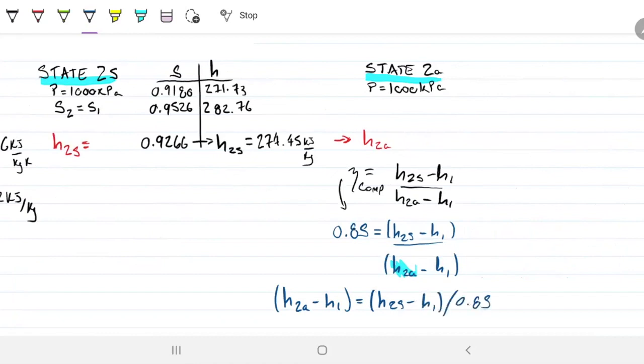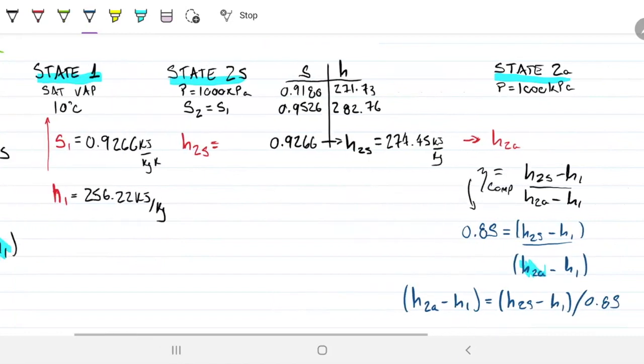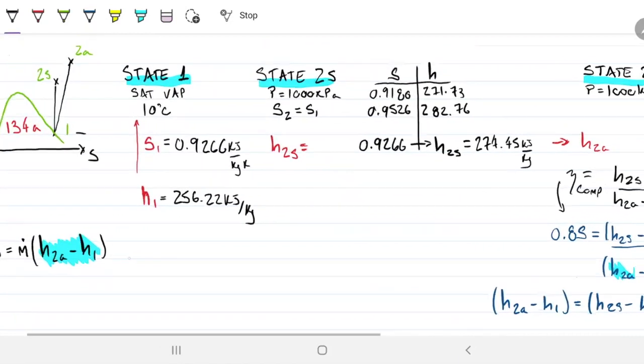And you could simply go, h2A minus h1 equals h2S minus h1 divided by 0.85. So I can save myself a couple of steps. So I can just plug that in there. So that means the power will be mass flow rate divided by my efficiency times h2S minus h1. You save yourself some time.